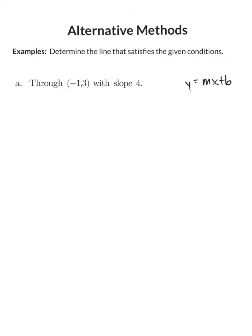Instead of plugging in negative 1 and 3 for x₁ and y₁, we're going to plug those in for x and y. I know my slope is 4. I have an x-coordinate of negative 1, so I plug that in for x, and a y-coordinate of 3, which I plug in for y. The only unknown is the y-intercept b. My first step to solve for b is to multiply 4 times negative 1 to get negative 4 plus b. Then I add 4 to both sides and we get 7 equals b.